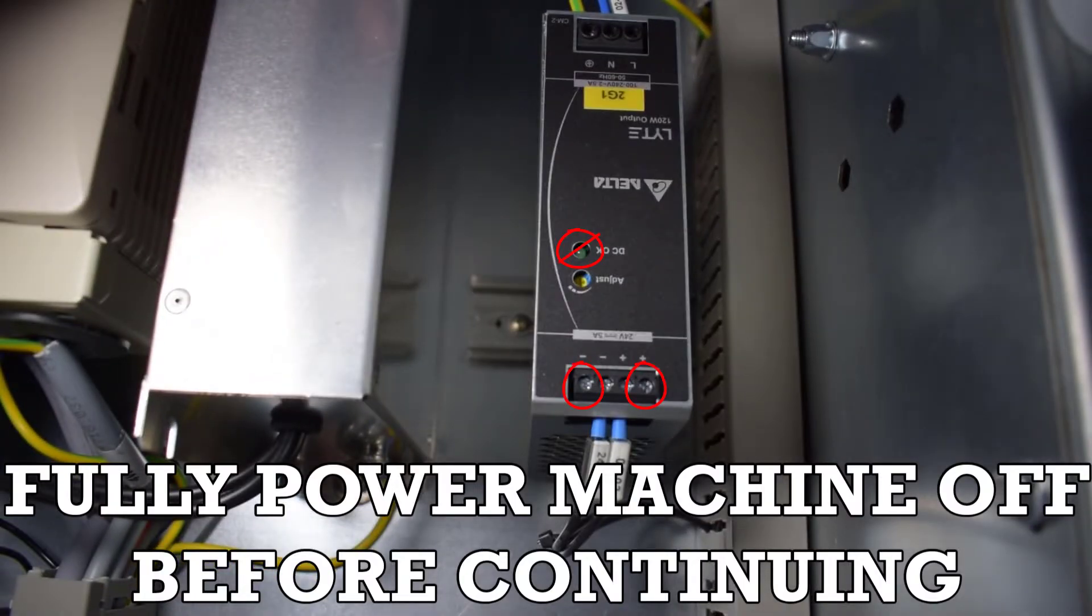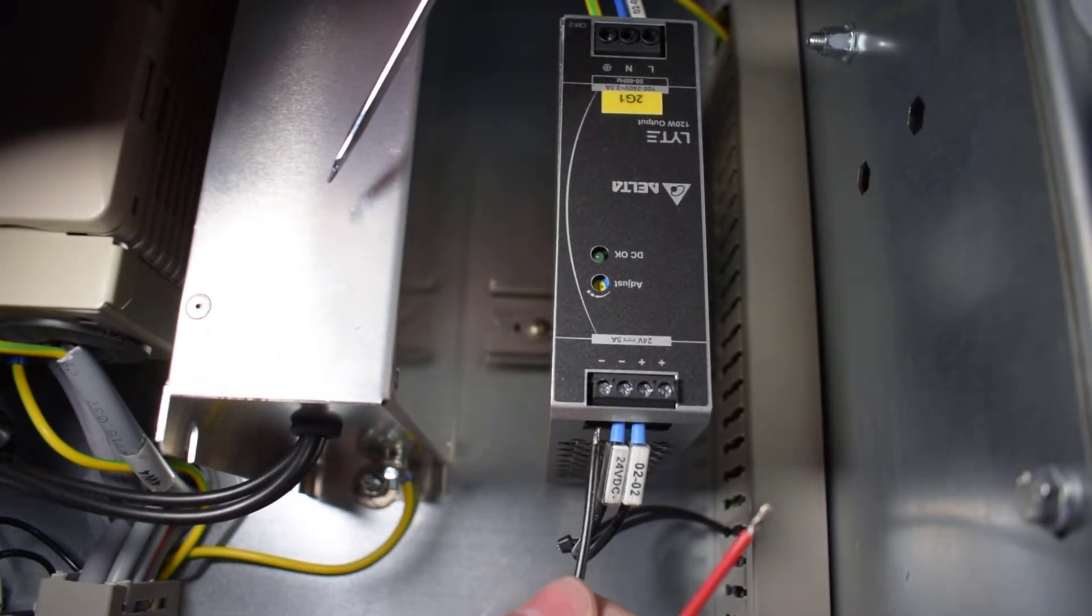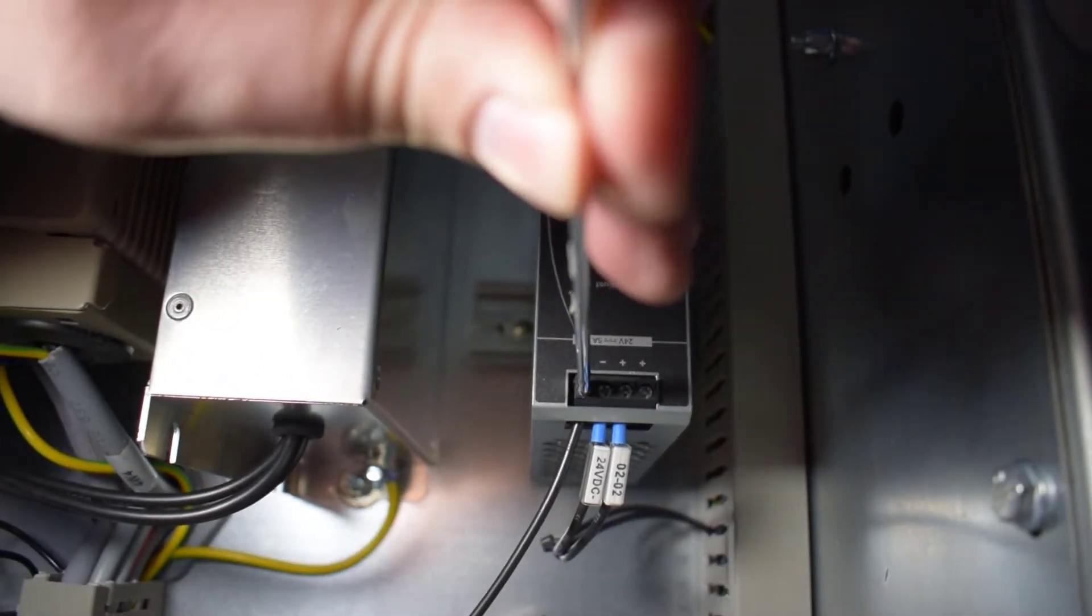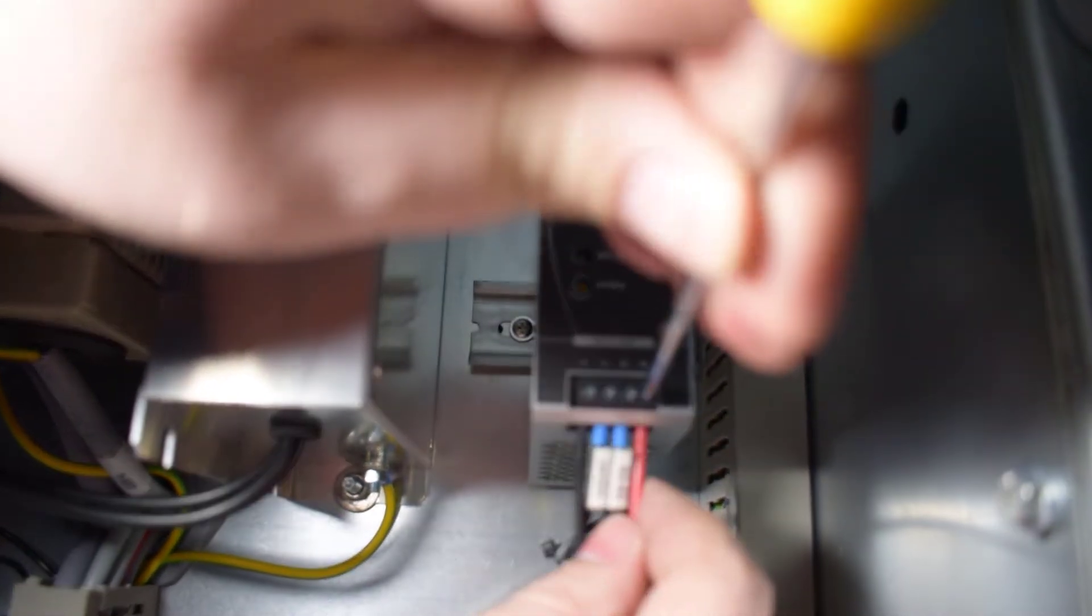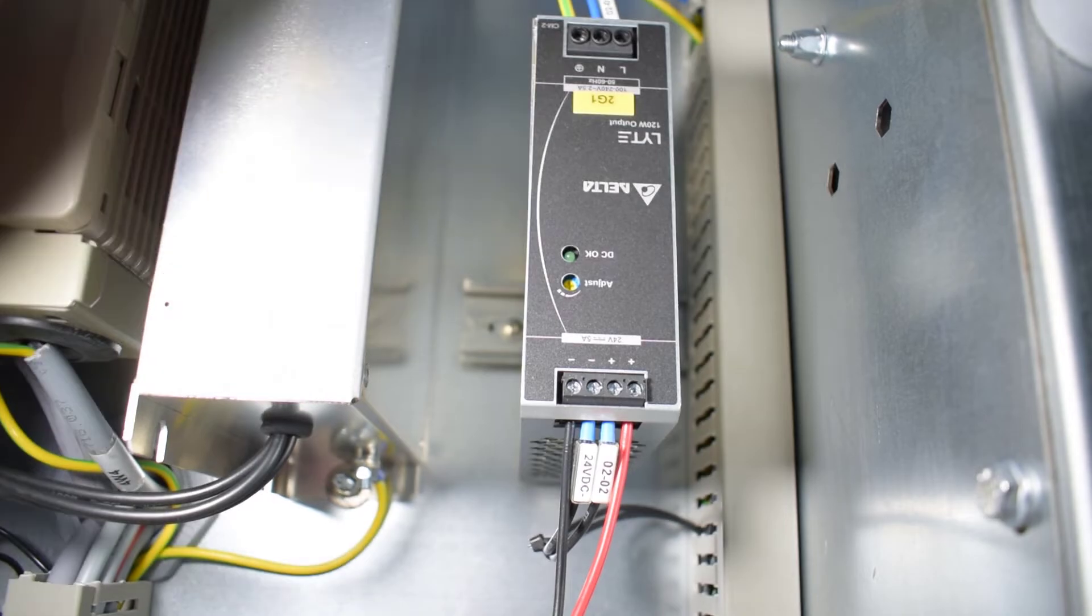From here you can see the terminal block connectors to be used. On the 24 volt 5 amp side of the power supply, with the machine completely off power and any lingering static discharged, connect the black wire to the available negative post and the red wire to the available positive post.